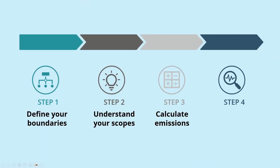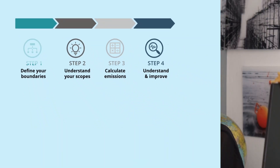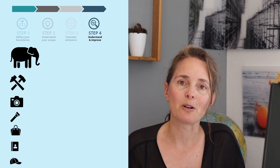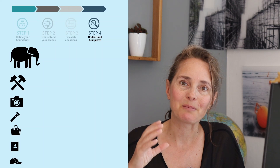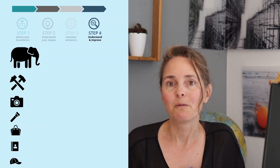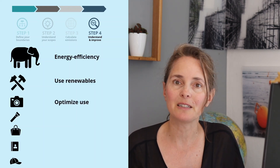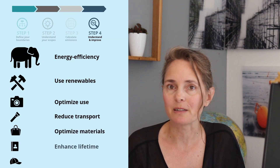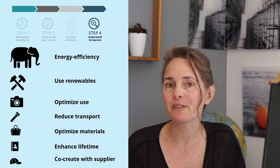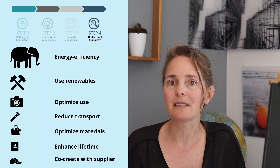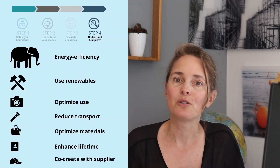Step four is probably the most important one — analyzing and improving. You sort all your articles in your backpack according to their weight, or according to the carbon emissions, and then see which ones you can optimize first. It's always good to start with the biggest amount of carbon emissions and work towards the smaller amounts. Sometimes it's easy, like shifting to renewable energy; sometimes it's more complicated and you have to invest in machinery to reduce the emissions.